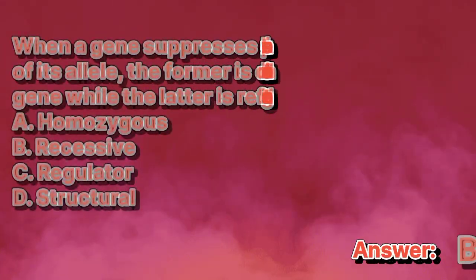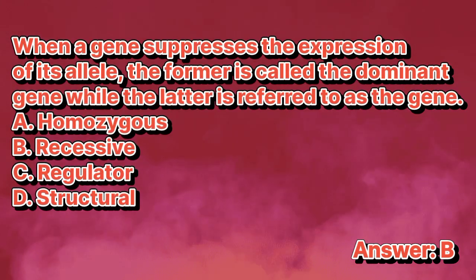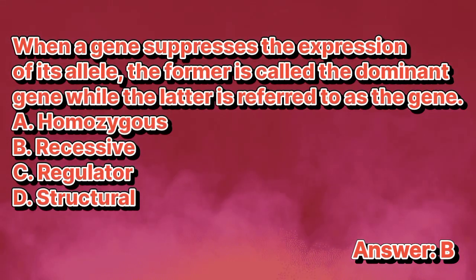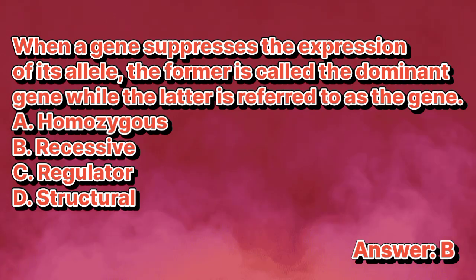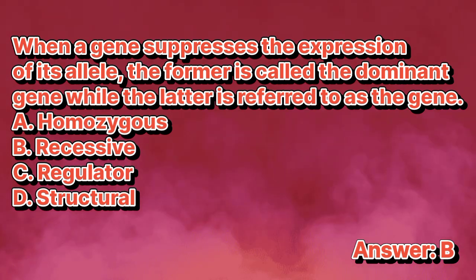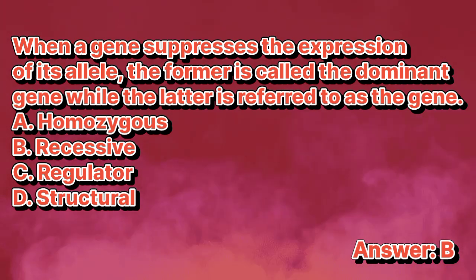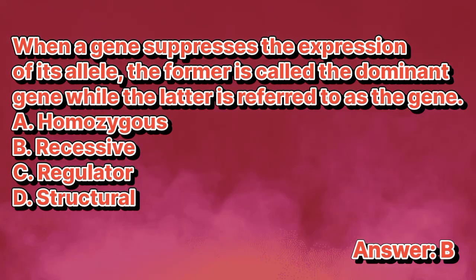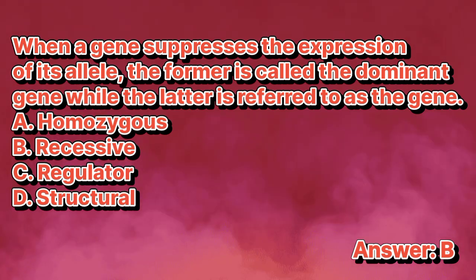When a gene suppresses the expression of its allele, the former is called the dominant gene, while the latter is referred to as the gene: A. Homozygous. B. Recessive. C. Regulator. D. Structural. The answer is letter B.